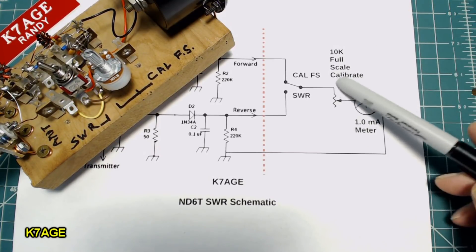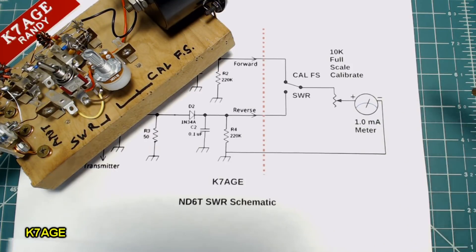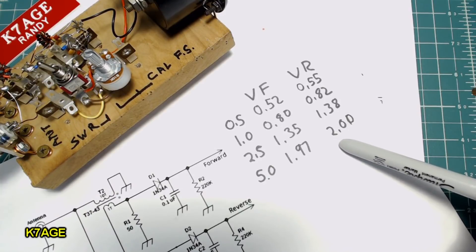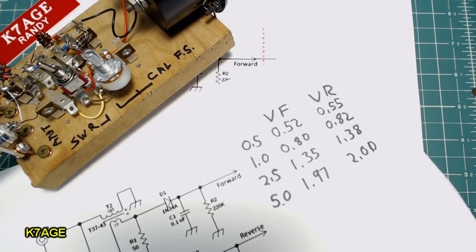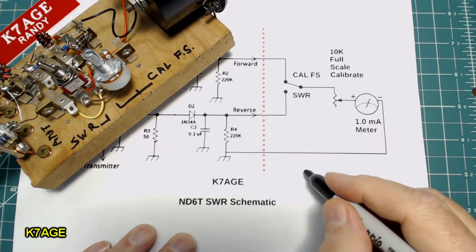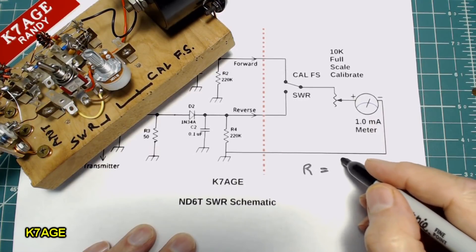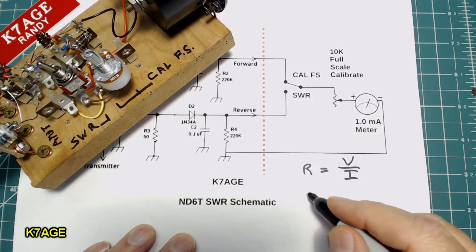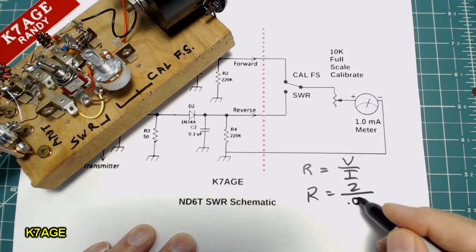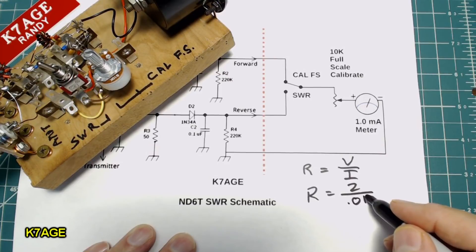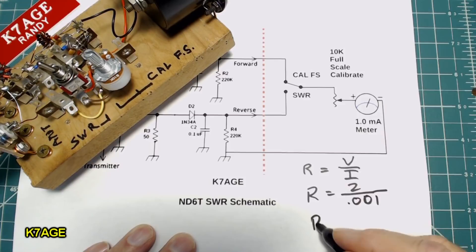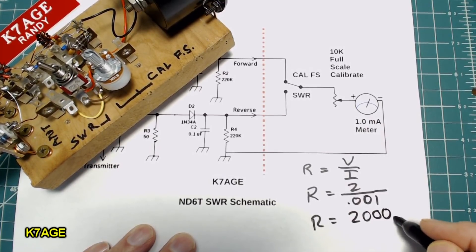So how did I figure out the value for this pot? Use a little bit of Ohm's law. So we'll go back to the table here and you can see that the maximum forward voltage was about 2 volts with 5 watts. So to find resistance using Ohm's law, R is equal to V over I, so R is going to equal to 2 volts over 0.001, 1 milliamp meter, and that makes R is going to equal to 2,000 ohms.